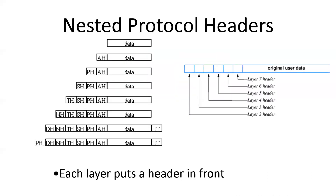As things go on in the network, everybody's adding headers. You have your data, you give it to the application layer — it puts its headers on, then the transport layer puts their headers on, the network layer puts its headers on, and so forth. Sometimes they even put trailers on, usually for error detection. So it gets big, and then as it goes back up the stack, each layer rips off its header and gives the rest to the layer above.